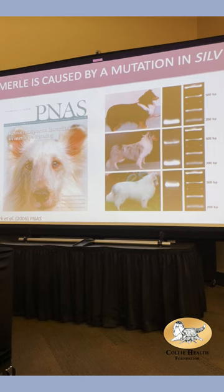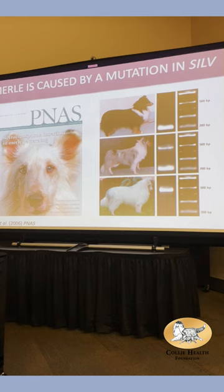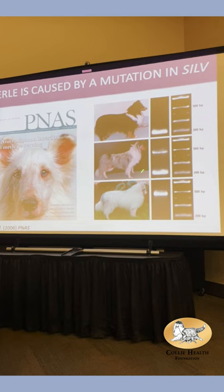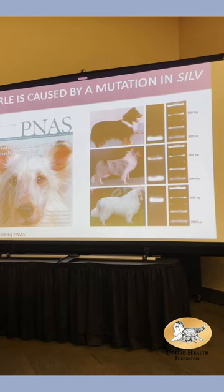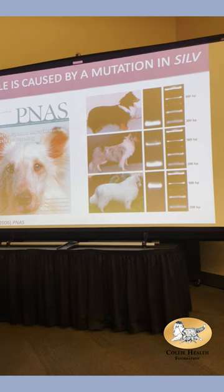Back in 2006, I discovered that an insertion in the gene SILV is what causes merle. This insertion is about 300 base pairs. The normal fragment should be about 200 base pairs, but the merle dog has a band at 500 base pairs — because there are 300 bases of extra sequence in the SILV gene. It's an insertion of 300 bases.